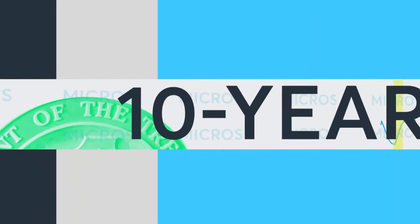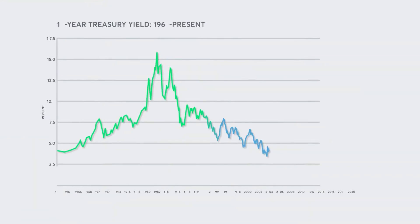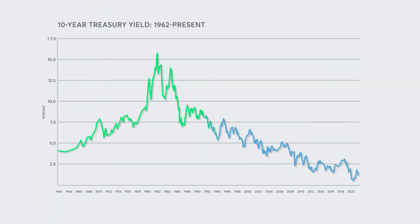Now interestingly, over the last 35 years, the slope of decline in the 10-year yield has been remarkably consistent. After a volatile early 1980s, in 1987 the 10-year was near 10 percent, and it began its gradual decline to a low near 0.5 percent in July of 2020.